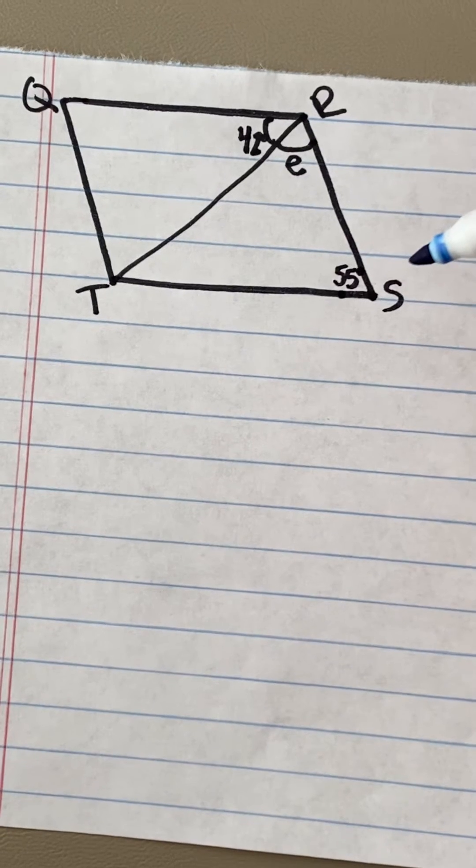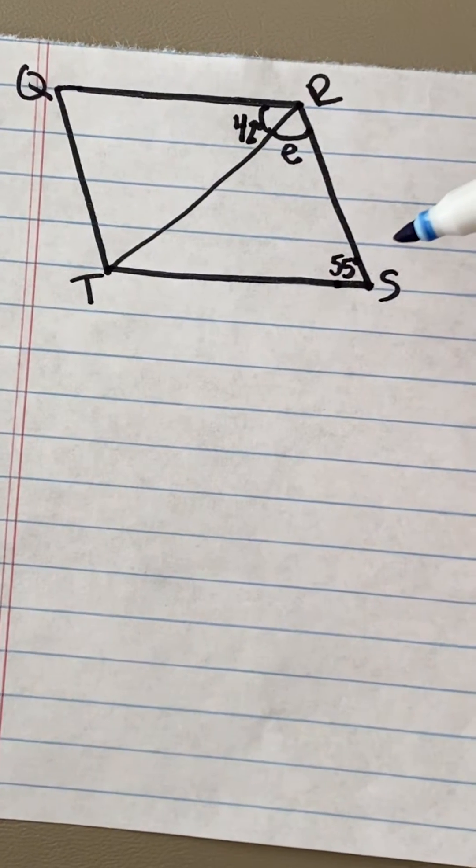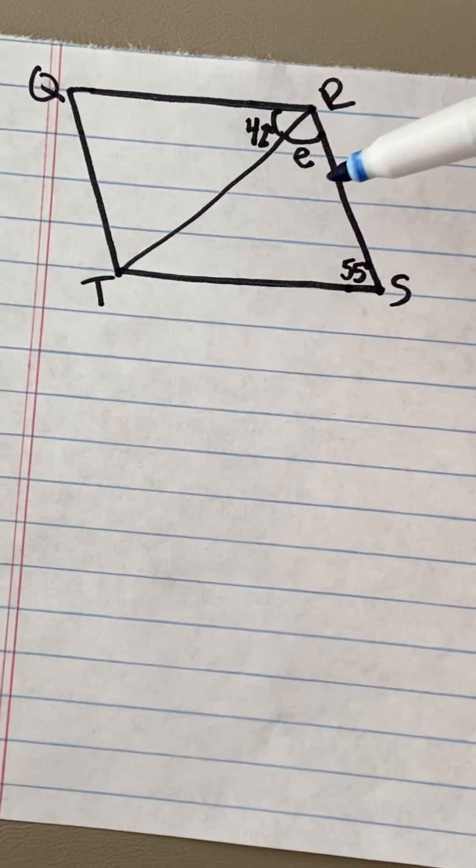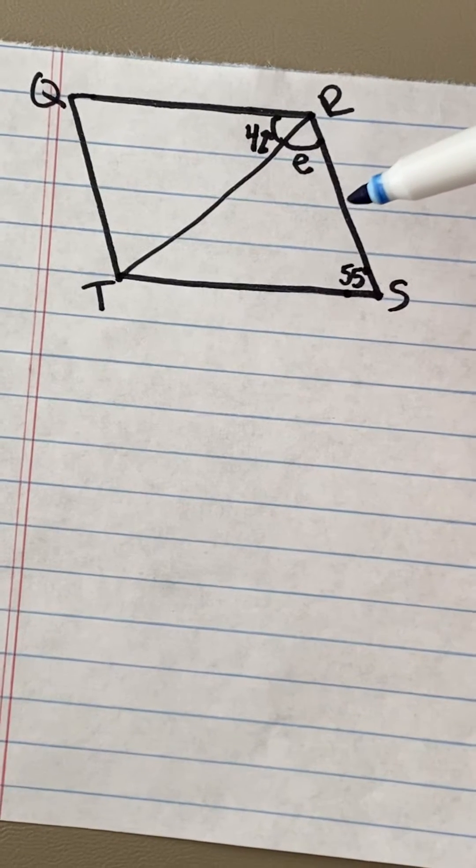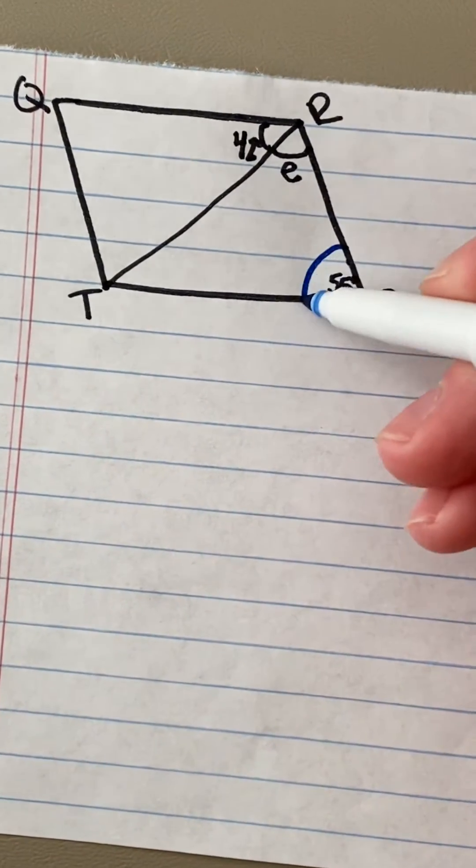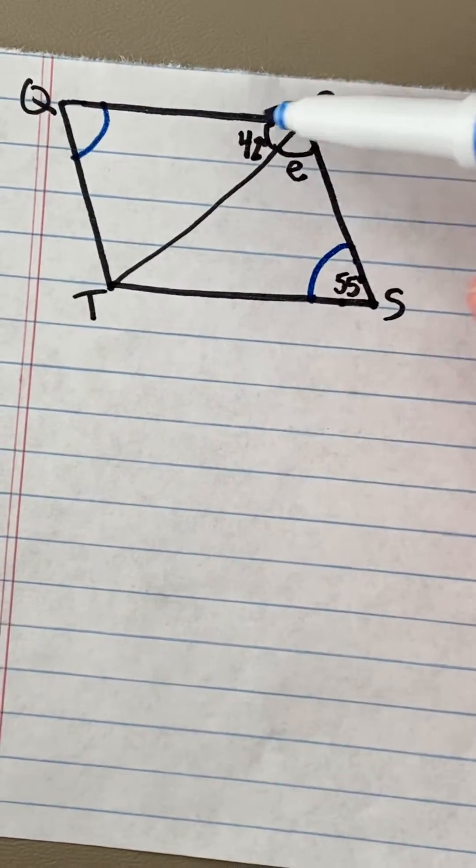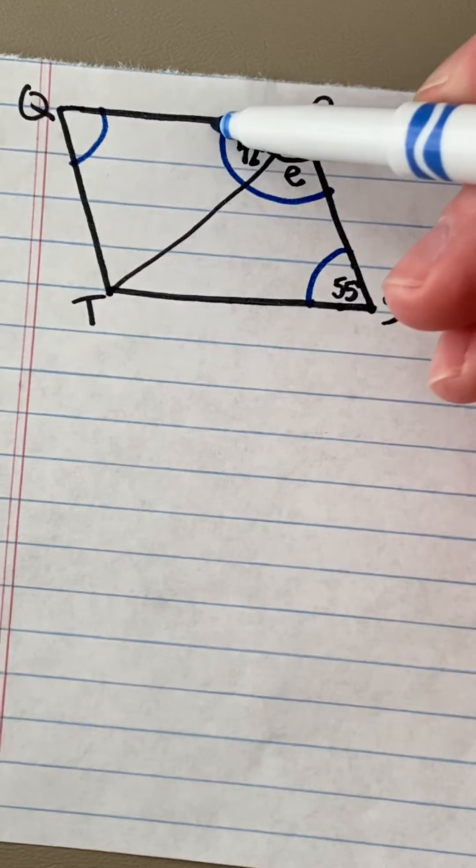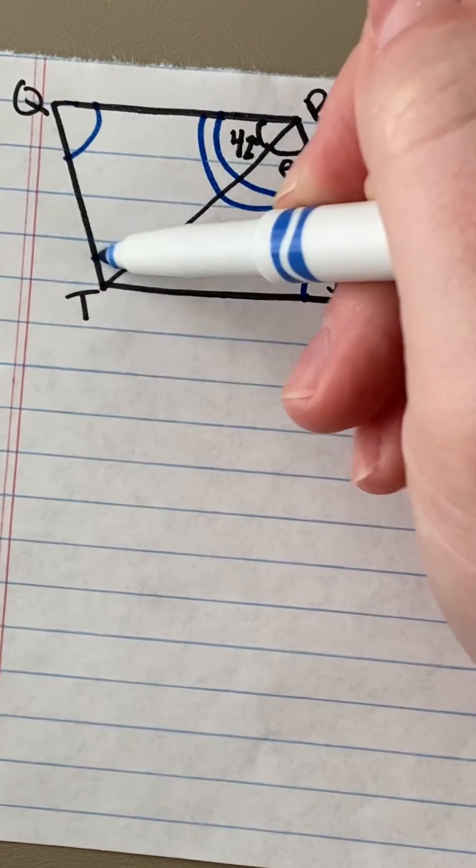We also have learned throughout our hands-on activities that in a parallelogram, opposite angles are congruent. So angle S is congruent to angle Q and angle R will be congruent to angle T.